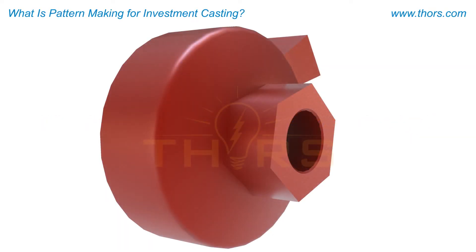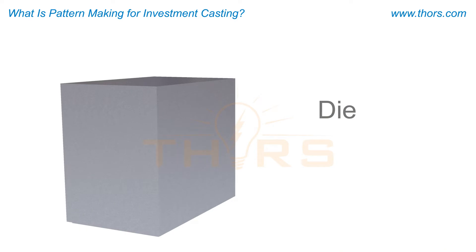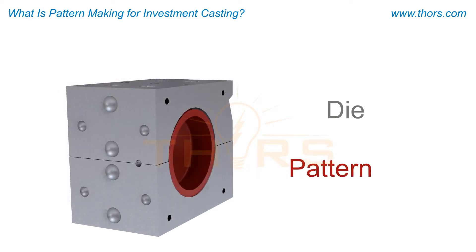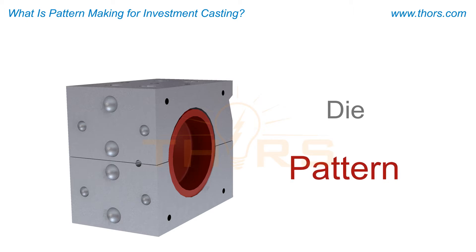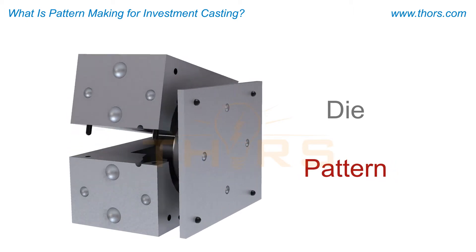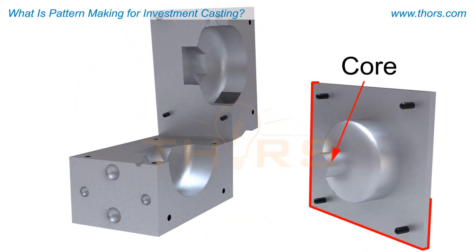To produce the wax pattern for an investment casting, a dye is fabricated with the cavities necessary to form the pattern during wax injection. The pattern's internal features may be formed using metal cores built into the dye that will be removed once the pattern is formed.